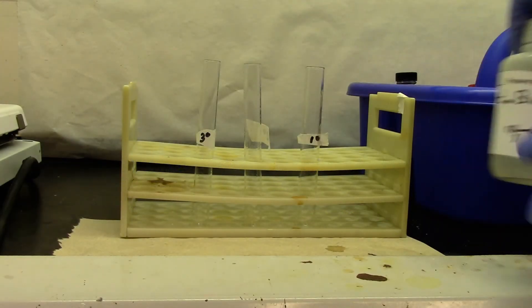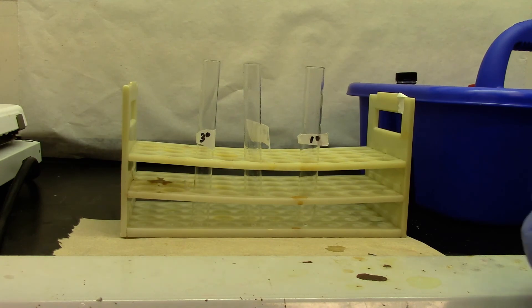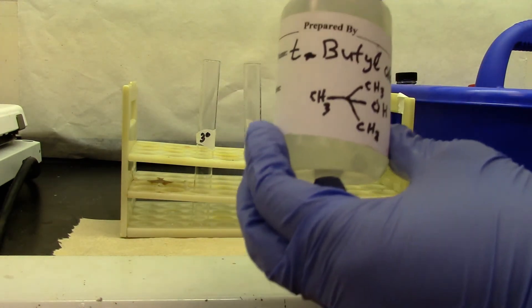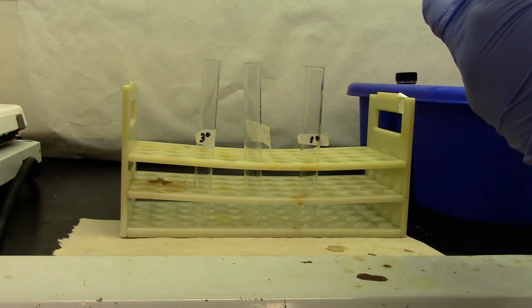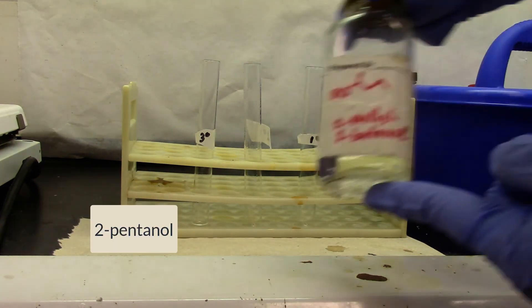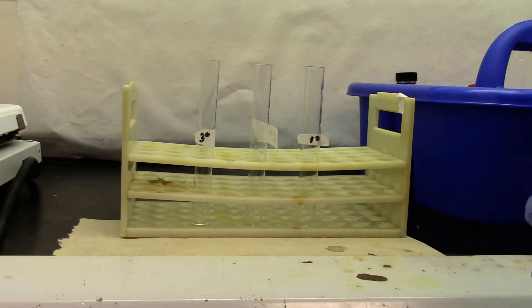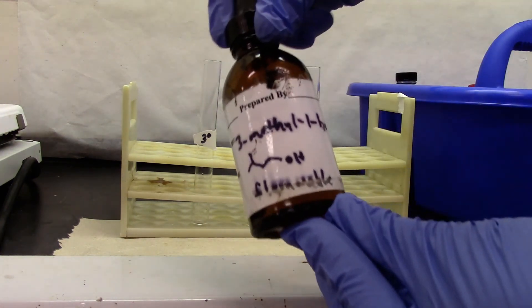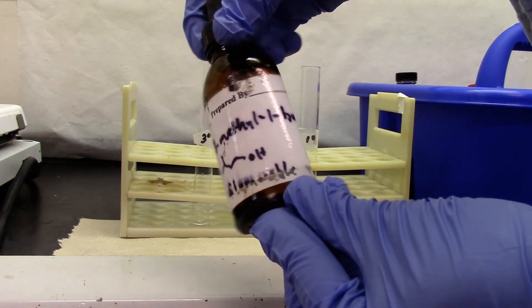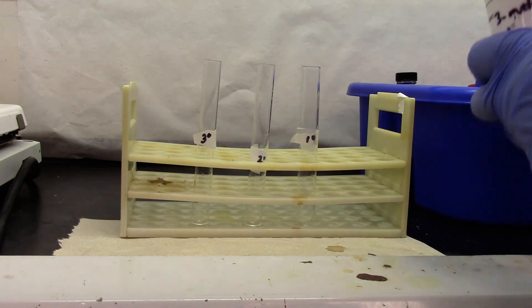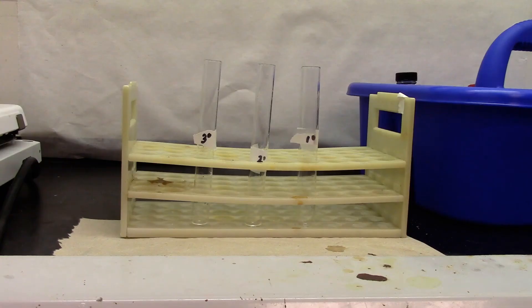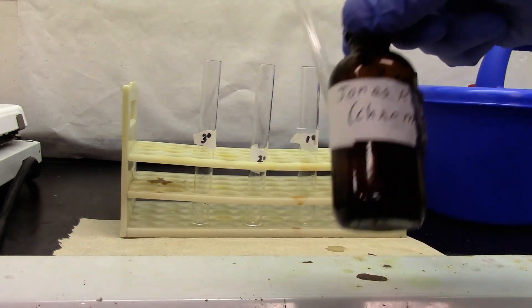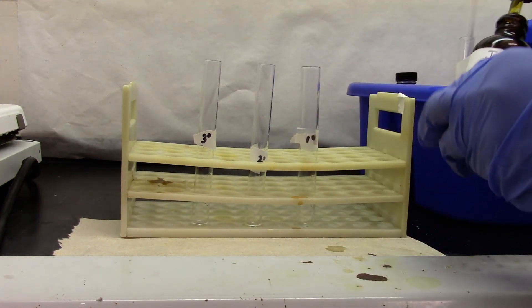We are doing Jones test for 3 different alcohols. That's my tertiary butyl alcohol, that is my secondary alcohol, and this is my primary alcohol, 3-methyl-1-butanol. I am going to add Jones reagent, 2 drops to each of these.